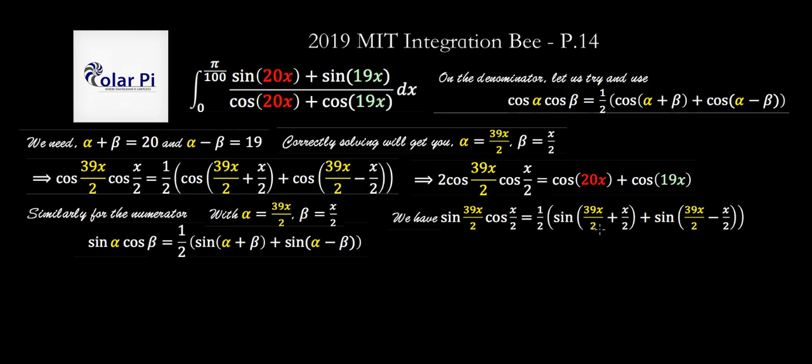And then on the right-hand side, we're going to get sine of 20x plus sine of 19x, all that multiplied by one-half. We already said what we're going to do about this one-half, but yeah, more importantly, what we have here—sine of 20x plus sine of 19x—is this numerator.